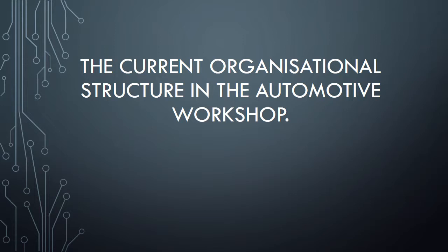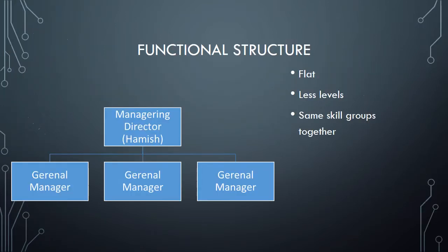This short video is about the current organizational structure for the automotive workshop compared to another. I believe the current structure is functional structure, which has one boss at the top, in this case Hamish, and then general managers for each area. This is a flat structure, meaning less levels of command, making it easier for communication to take place. Also, the groups under the general managers are put together as they have the same skills.